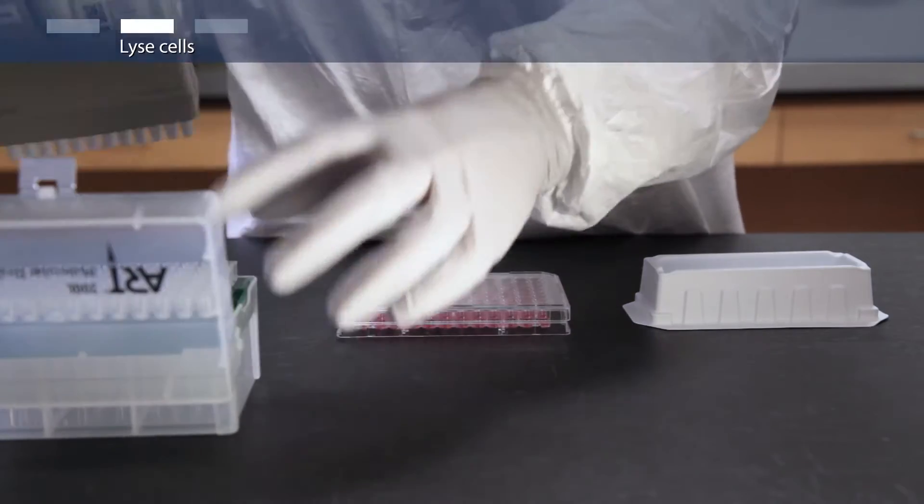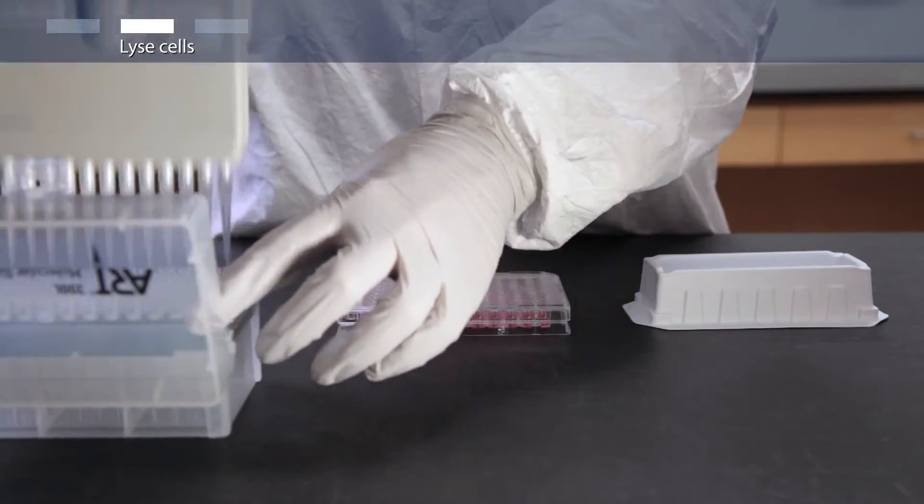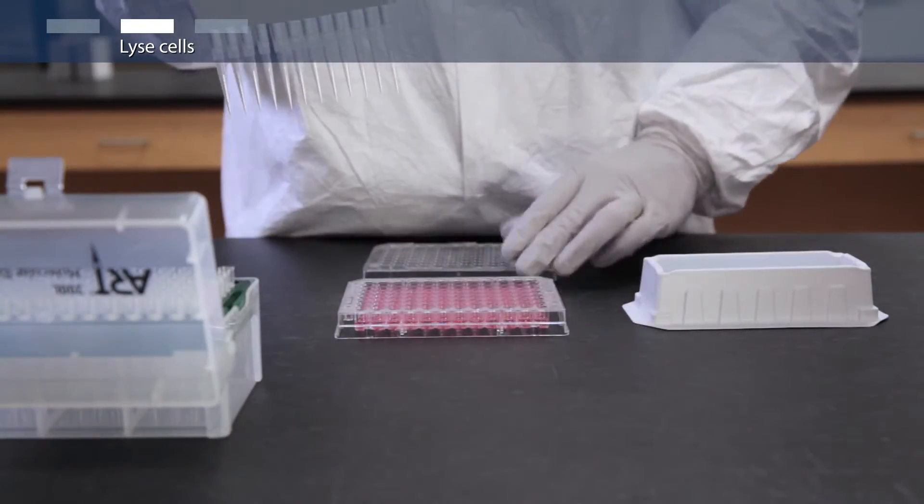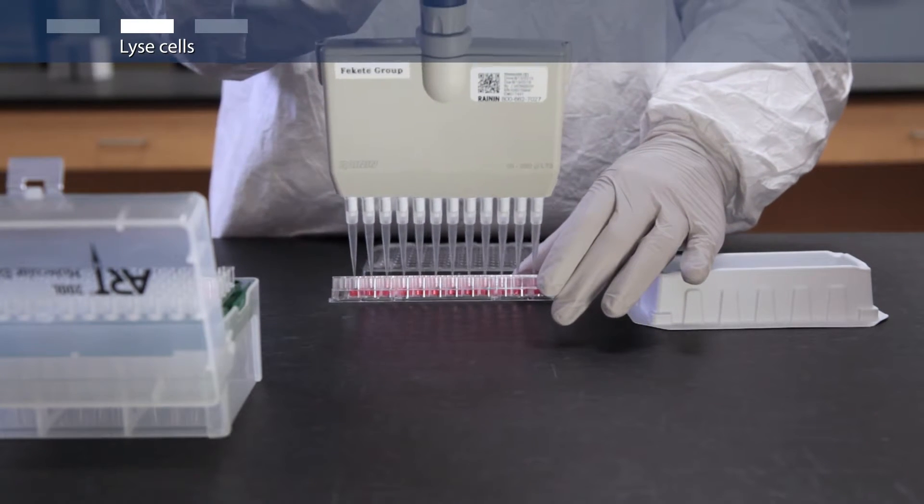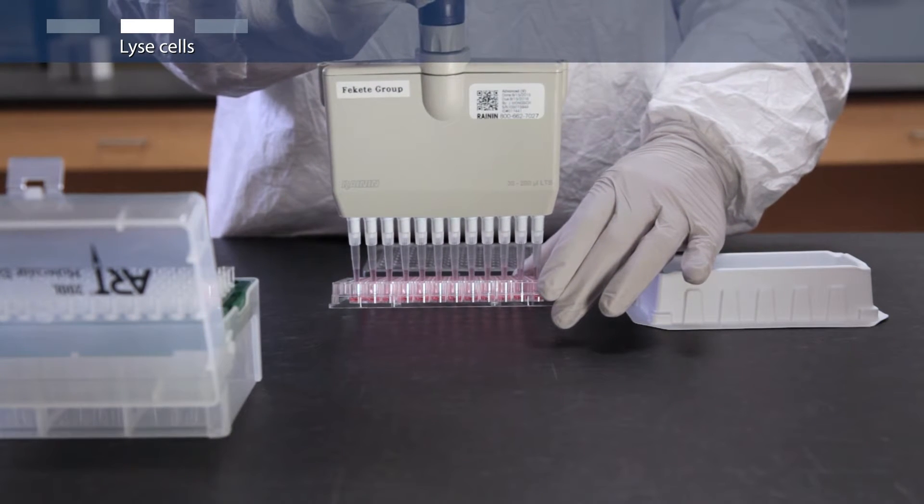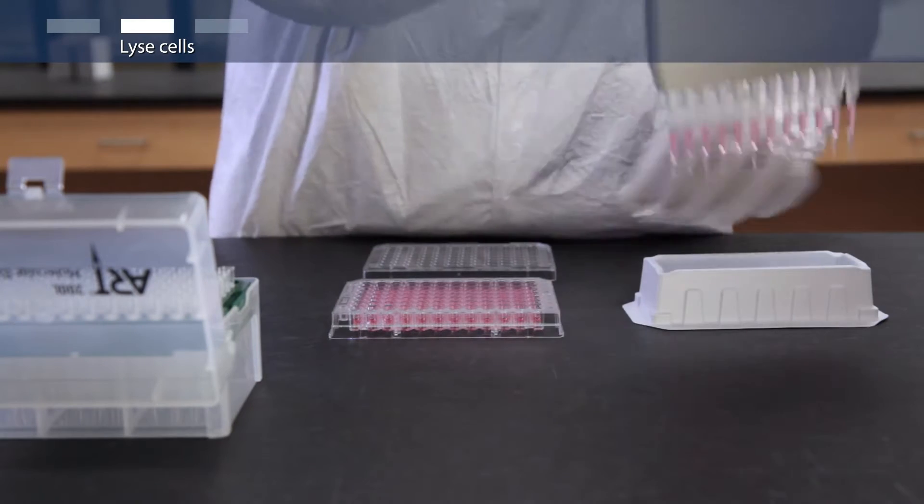To prepare to lyse your cells, first remove the media from the adherent cells and rinse them with PBS. Then aspirate the PBS and add 50 microliters of lysis solution per well.